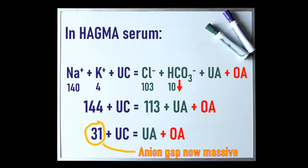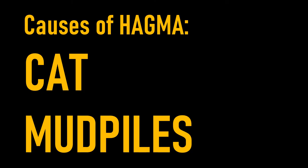There are only a finite number of organic acids that can do this to your body. Luckily, there is a mnemonic to help you remember what these, or their parent compounds, are. I really like CAT MUDPILES.